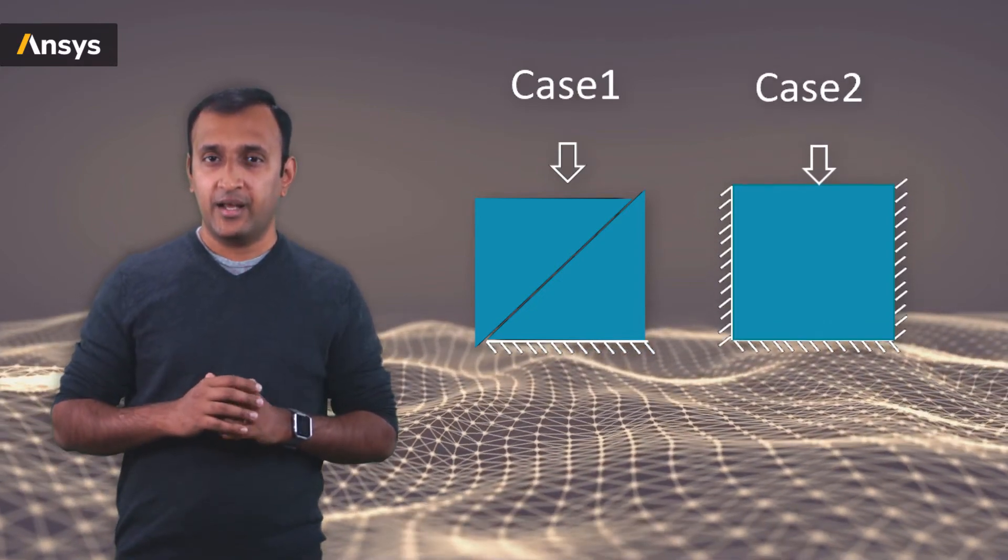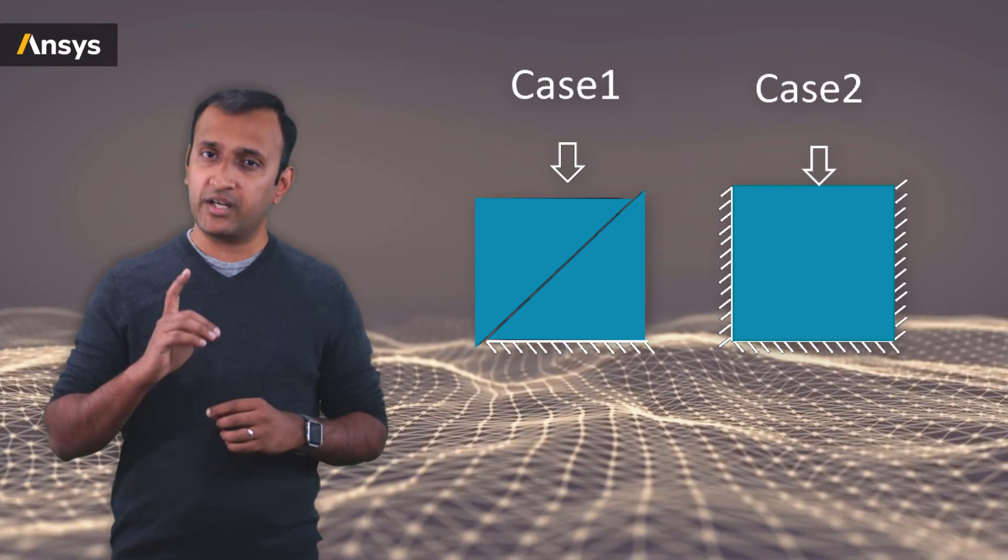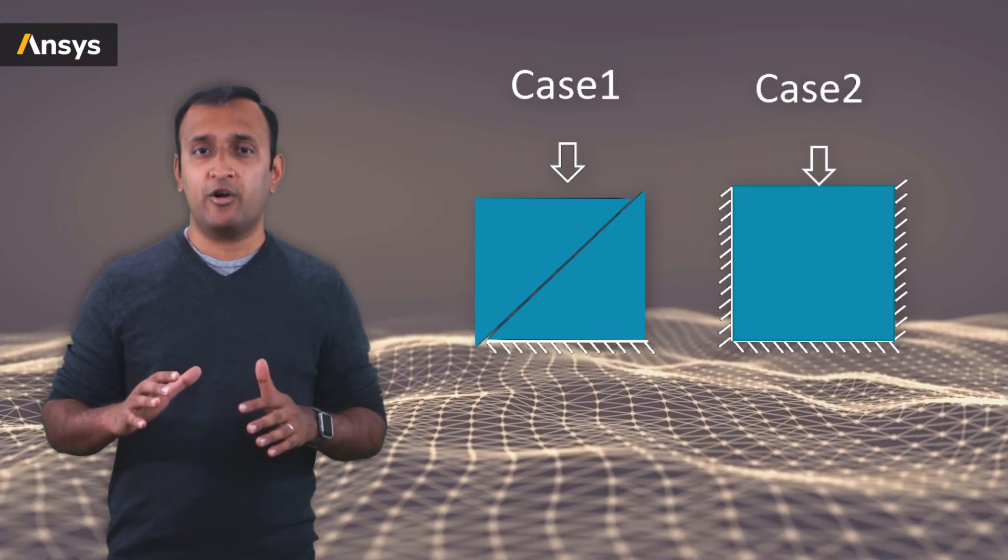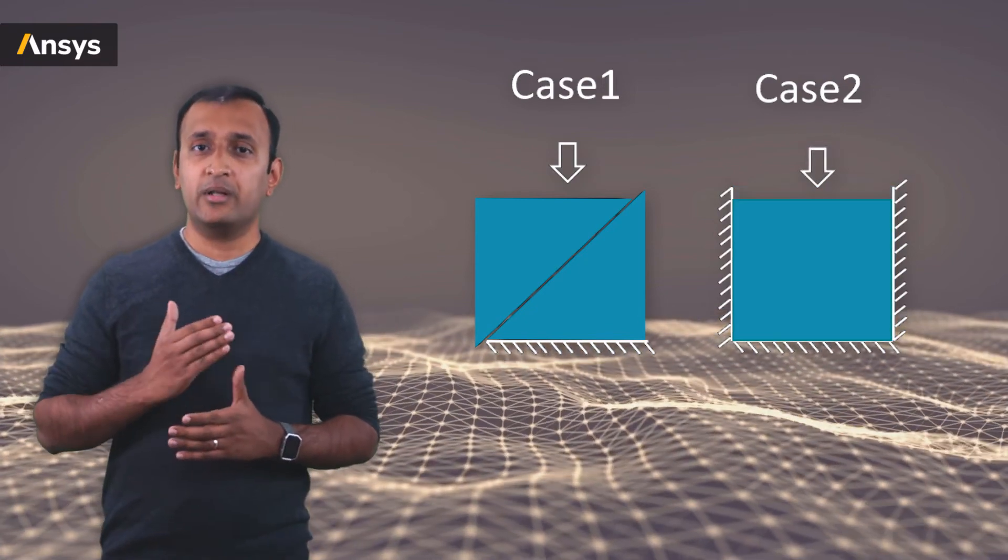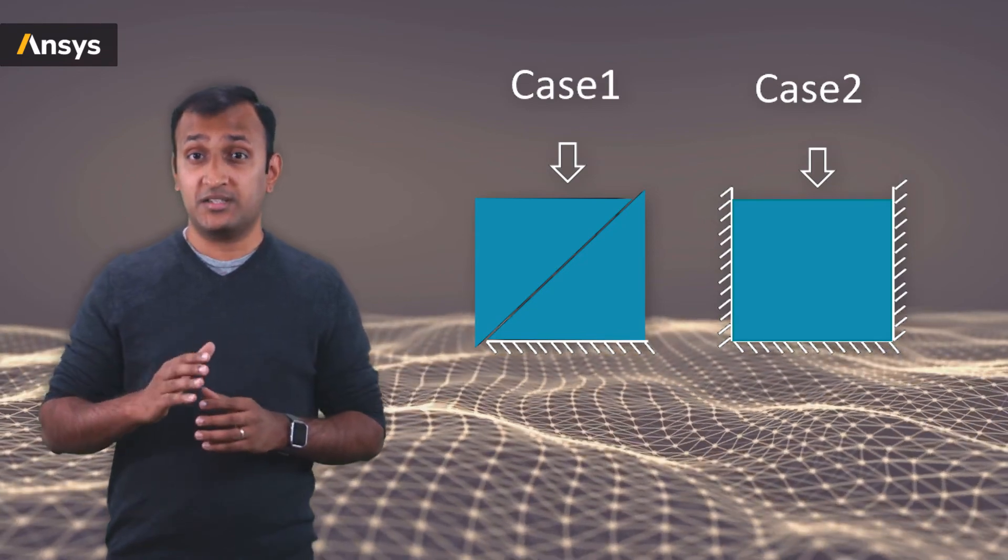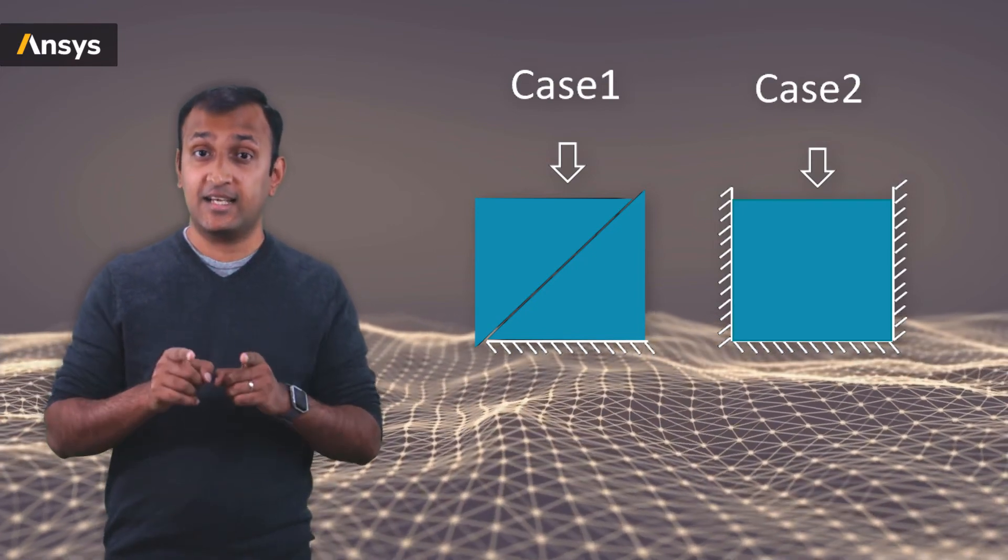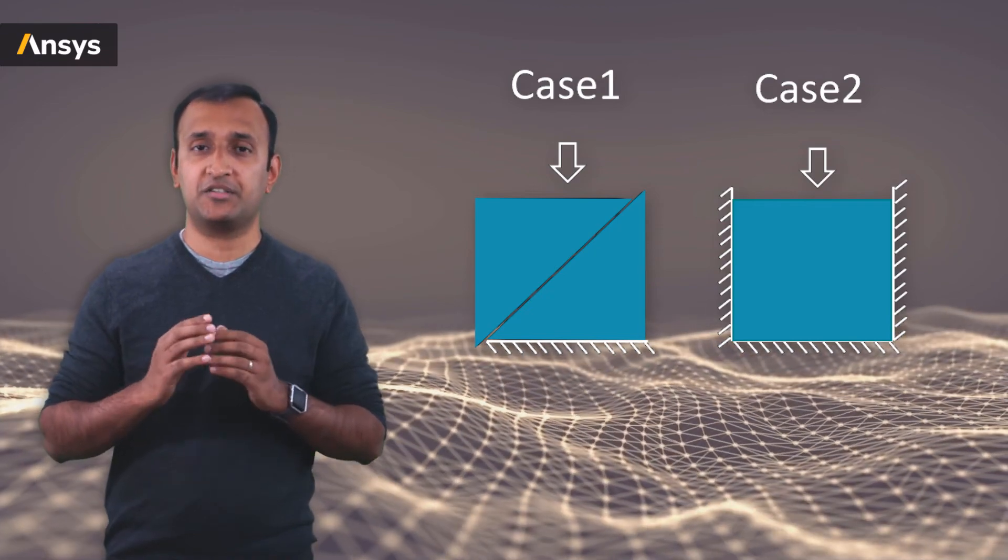In the second case, we constrain the block in all directions and apply the same force in one direction. In this case, the material is not allowed to deform in any other direction, so the material can deform only when there is a change in volume. Thus all the stresses developed in the body are volumetric in nature. This is the physical interpretation of deviatoric and volumetric stresses.